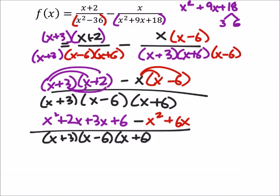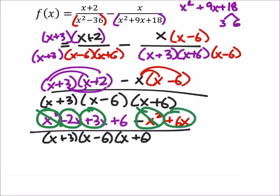So at this point, we're looking to combine like terms. I've got an x squared and a minus x squared, meaning these cancel. I've got a 2x plus 3x minus 6x, which would be 11x. And this plus 6 doesn't have anything to combine with, so I've got a plus 6 all over our denominator.